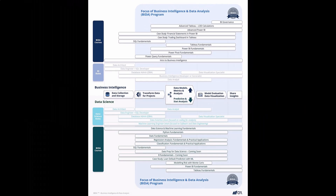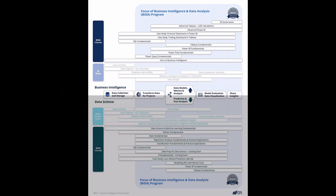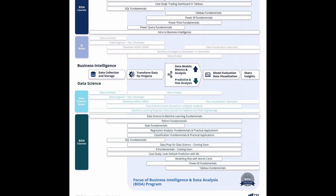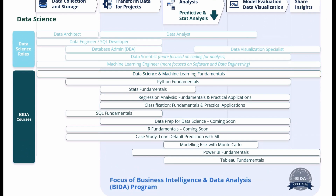The top half of this diagram represents the BI roles that fit within the process and the courses for BI. What I'd like to talk about is how the data science courses fit in here. You've just completed data science and machine learning fundamentals. Two key skills you're likely going to need to do the rest of our courses are Python fundamentals and stats fundamentals, so I recommend you look at those next.